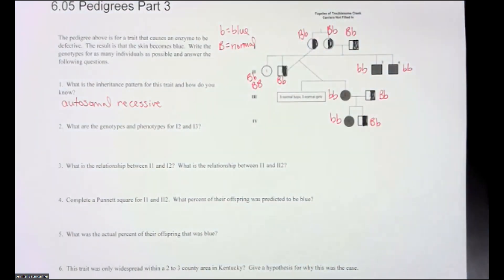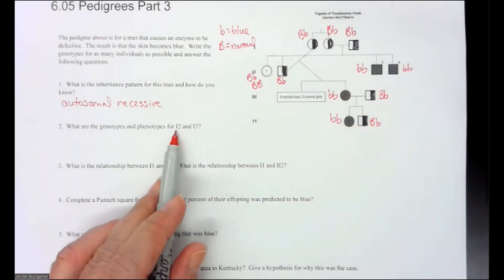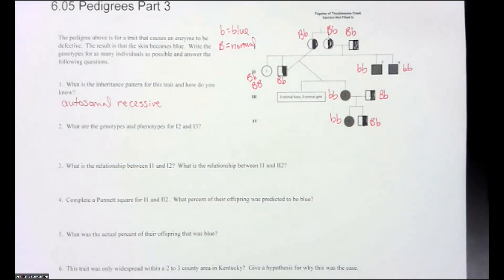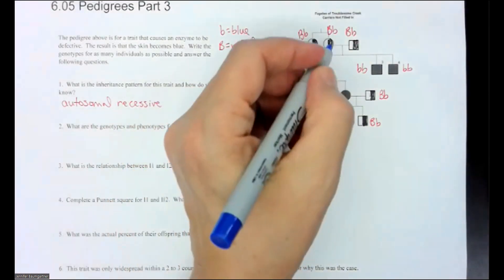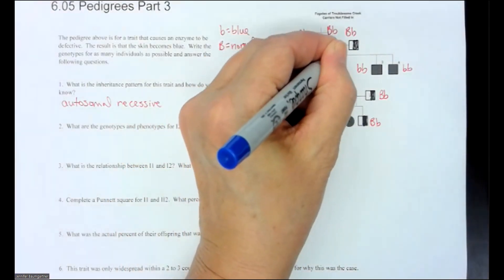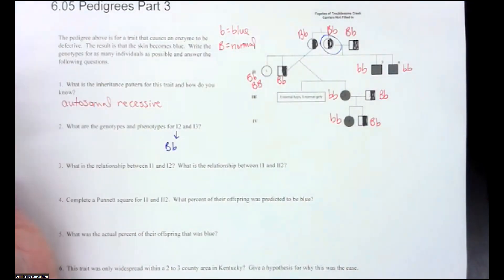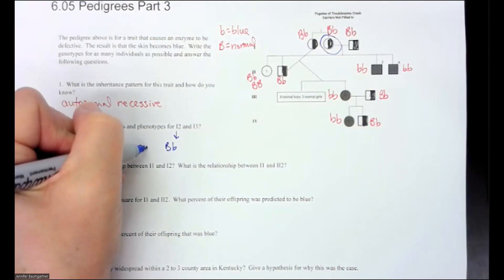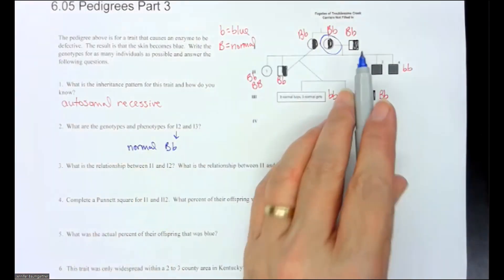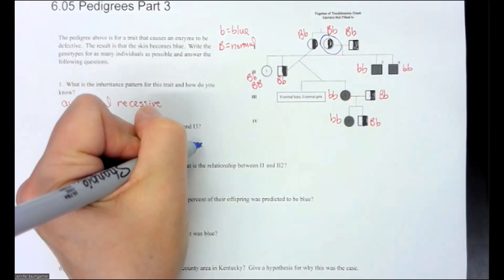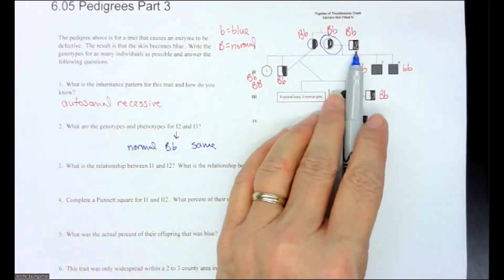All right, pause the video and let's go through the rest of these, look at the questions and then we'll go over the answers. All right, did you pause the video? All right, so they say, what are the genotypes and phenotypes for Roman numeral 1-2 and Roman numeral 1-3? So if I'm looking at, this is Roman numeral 1, and I crossed it off, but this was number 2. So the genotype here was BB and they were normal, is the phenotype. And for 1-3, we have the same.